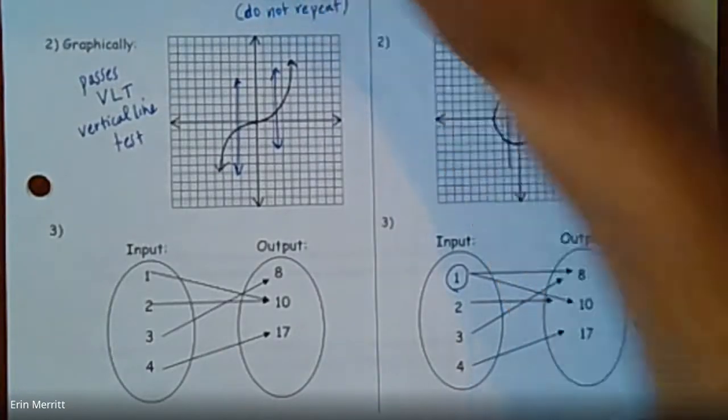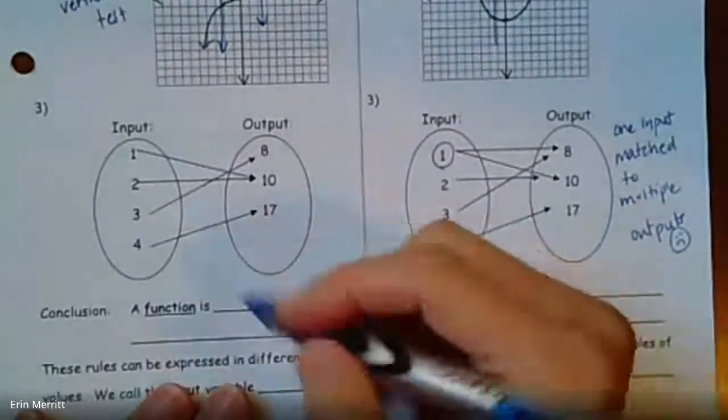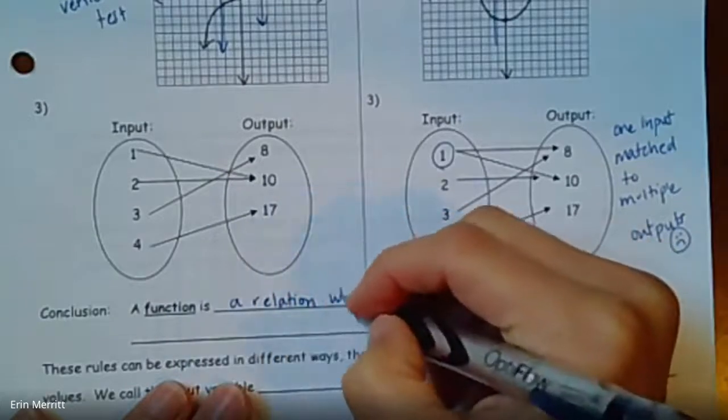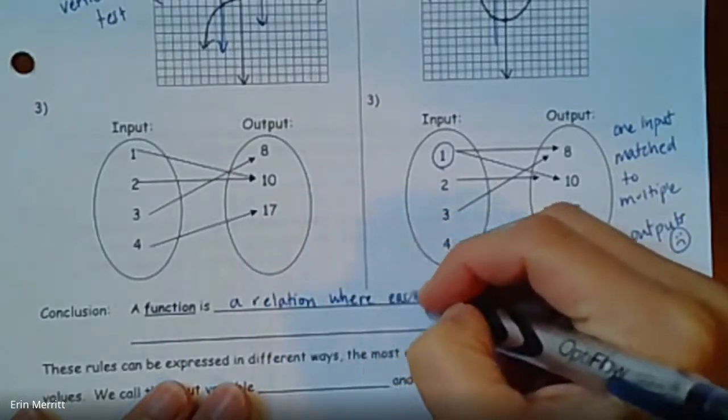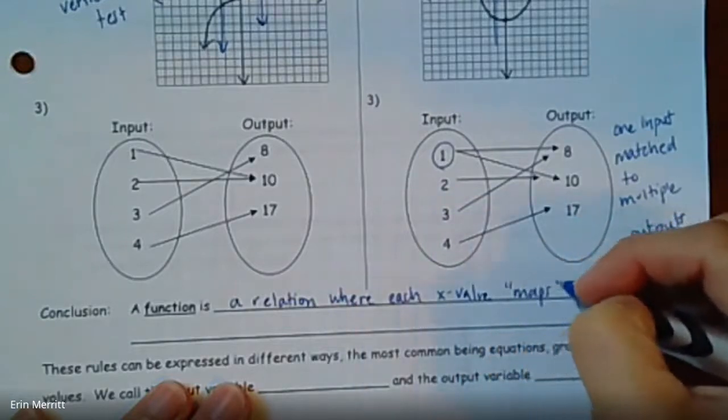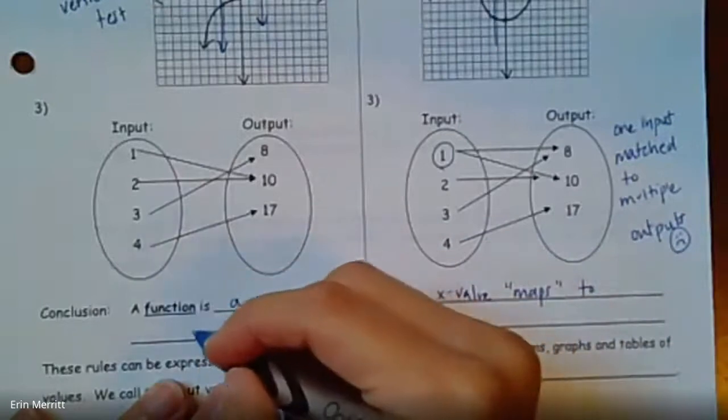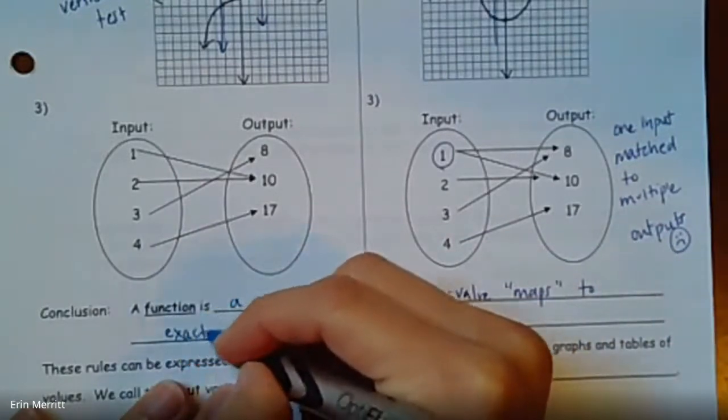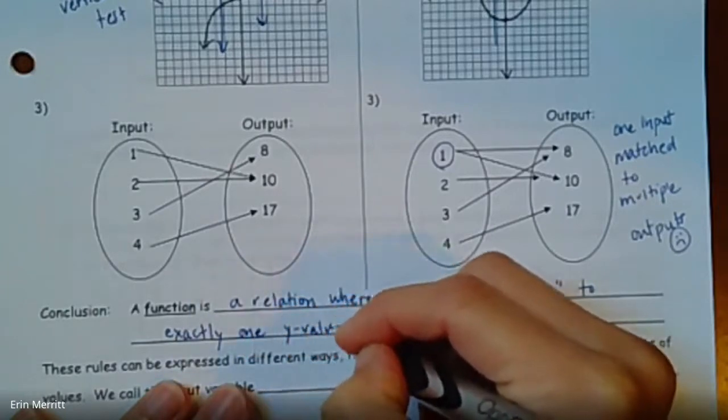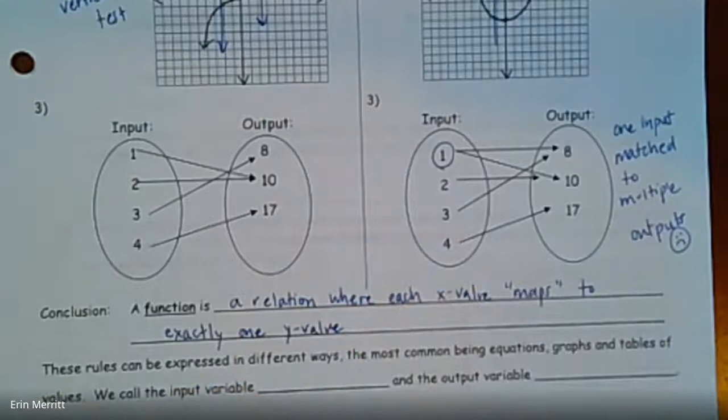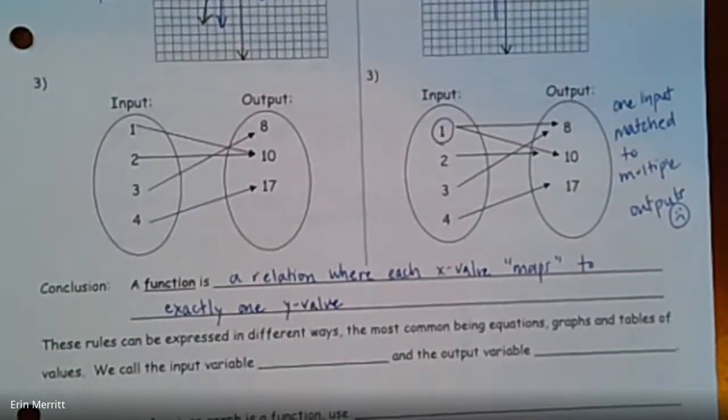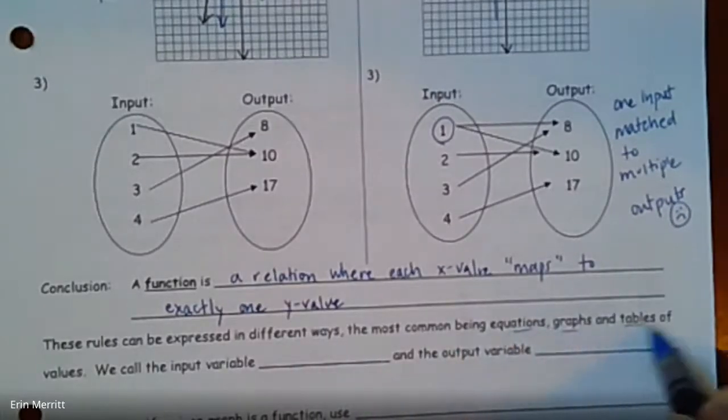So down at the bottom, under our conclusion step, a function is a relation where each x value maps or matches to exactly one y value. Then it says the rules can be expressed in different ways. Most common being equations, graphs, tables.